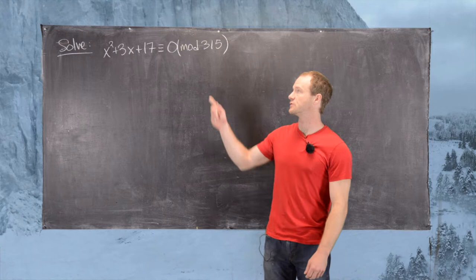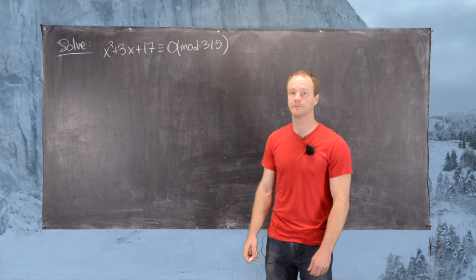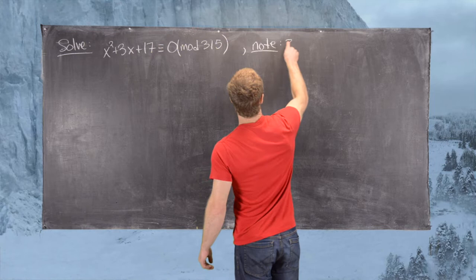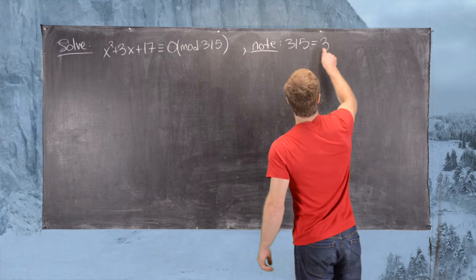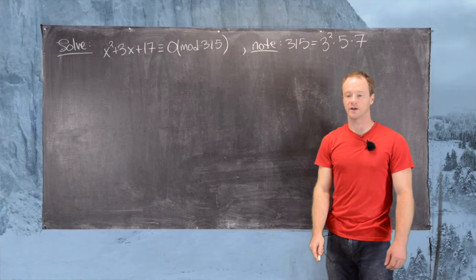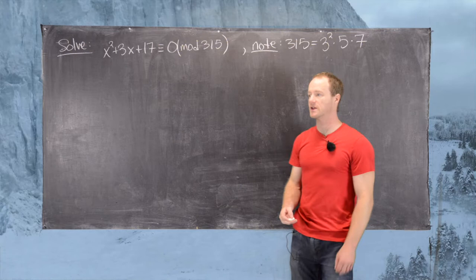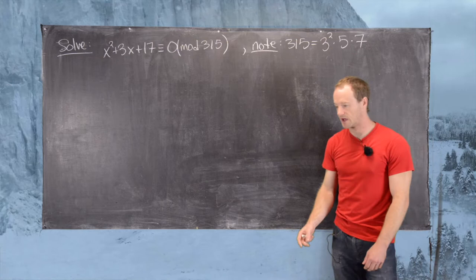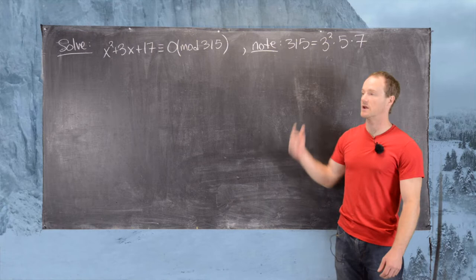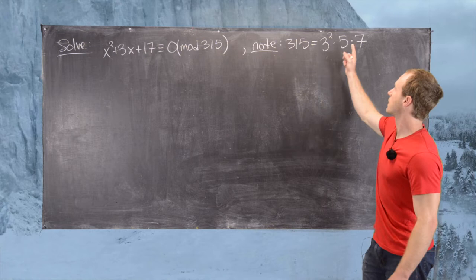In this video we're going to solve the following quadratic congruence: x squared plus 3x plus 17 is congruent to 0 mod 315. The first thing we notice is that 315 factors into primes as 3 squared times 5 times 7. Using a result from a previous video — if we know solutions modulo relatively prime numbers, we can construct a solution for the given number — we'll look at this polynomial congruence modulo 9, 5, and 7.